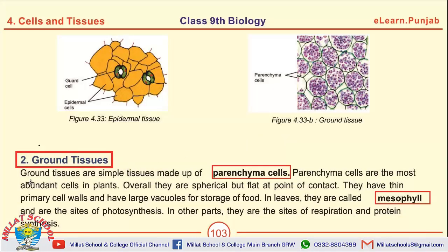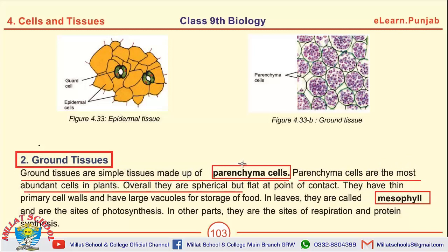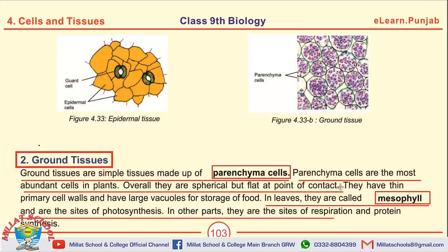The next topic is ground tissues. What are ground tissues? Ground tissues are simple tissues which are made up of parenchyma cells. Parenchyma cells are the most abundant cells in plants. They are spherical but flat at the point of contact. In leaves, they are called mesophyll cells and are involved in the process of photosynthesis, while in some other parts they are involved in respiration and protein synthesis.